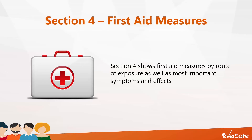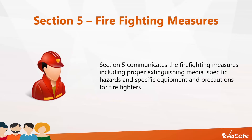Section 4 shows first aid measures by route of exposure as well as the most important symptoms and effects — this is the section workers may go to after they've had some kind of exposure to a product. Section 5 communicates the firefighting measures including proper extinguishing media, specific hazards, and specific equipment and precautions for firefighters. If you really want to be proactive, you can provide SDSs for the products you use to your local fire department — this information will be extremely valuable if a fire were to ever break out within your facility.